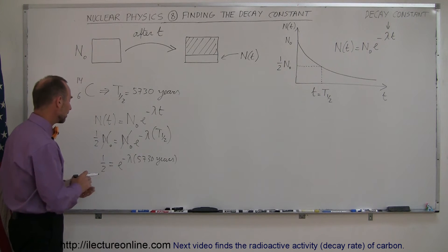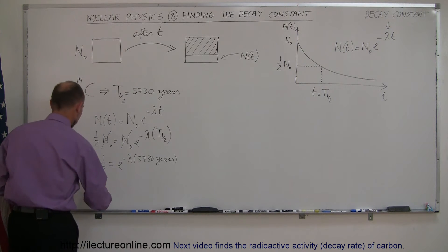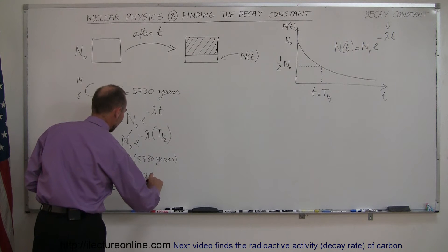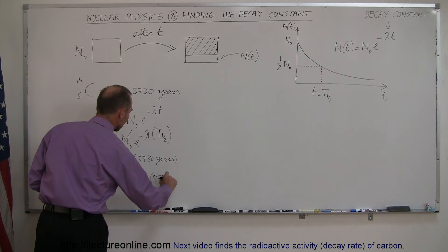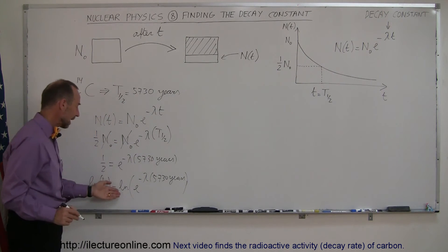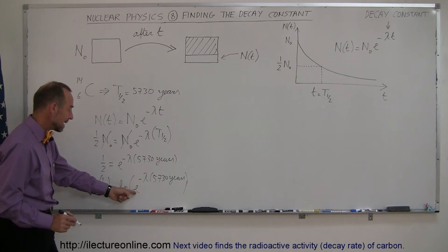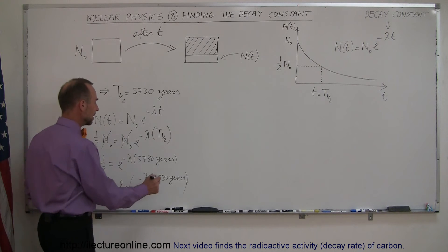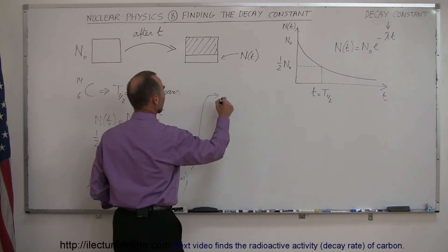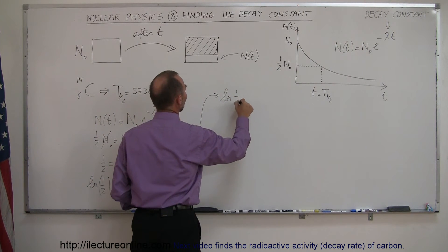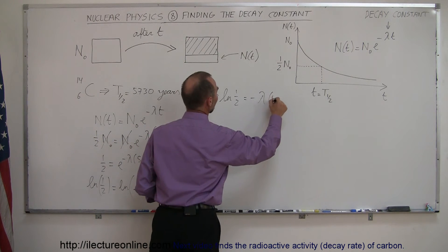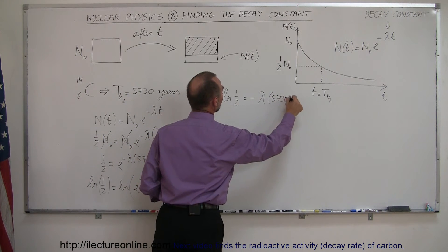Okay, the next thing to do would be to take the natural log of both sides. So we take the natural log of the left side, and that should equal the natural log of the right side, e to the minus lambda times 5,730 years. Of course, if you take the natural log of the right side, that will negate the exponent, or at least e to the exponent. And so that means, if we then go over here, that the natural log of one-half is equal to minus lambda times 5,730 years.